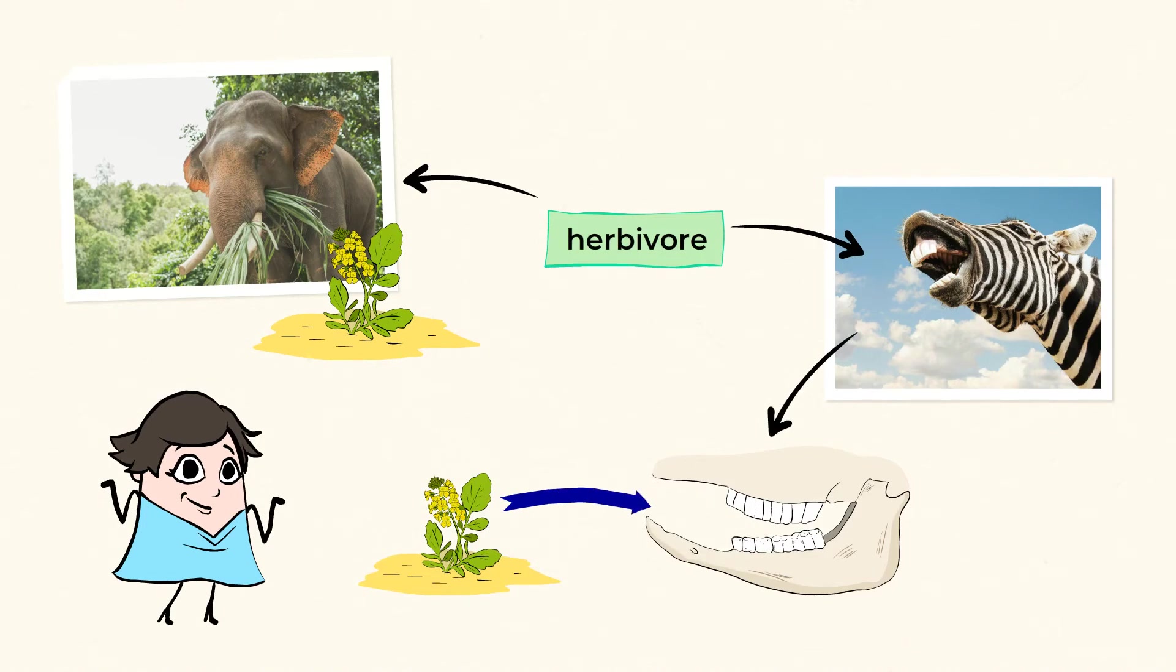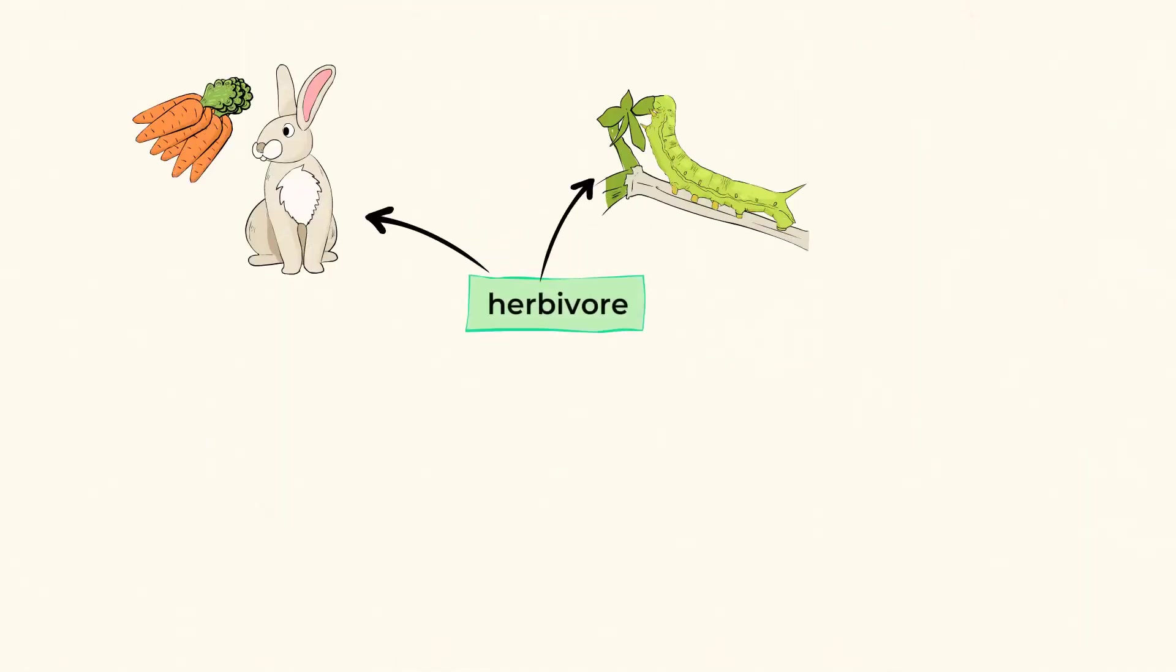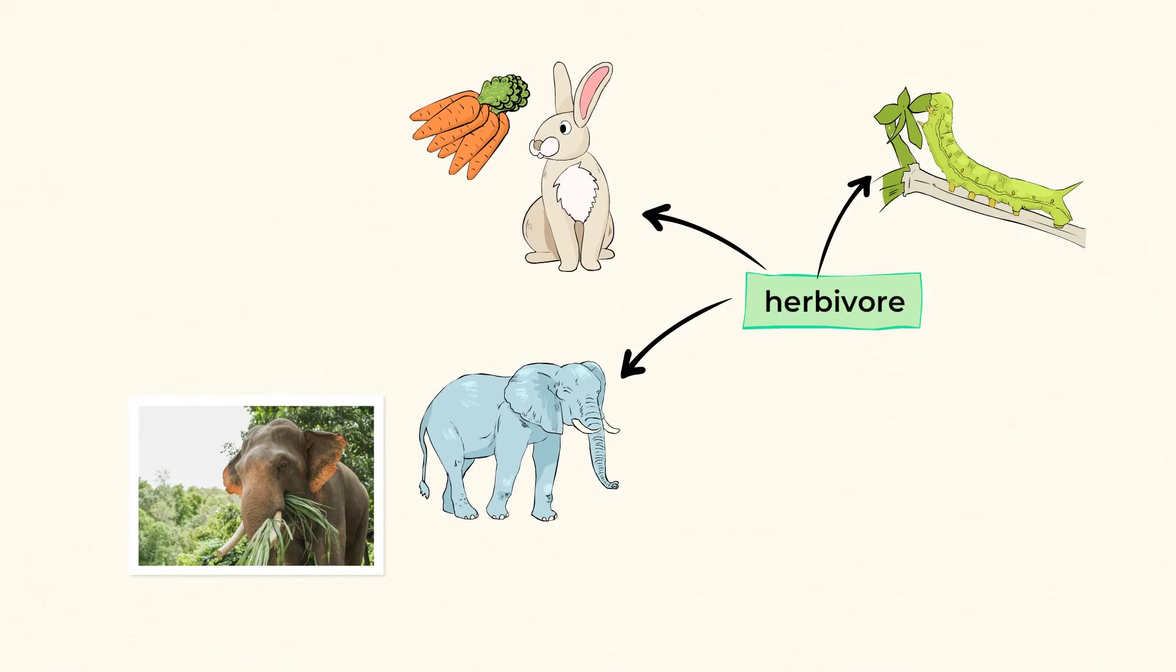Herbivores come in all shapes and sizes. Rabbits and caterpillars are herbivores, but so is the African elephant. Yep, that's right. These giant creatures eat 200 to 600 pounds of grass, bark, leaves, and twigs every day.